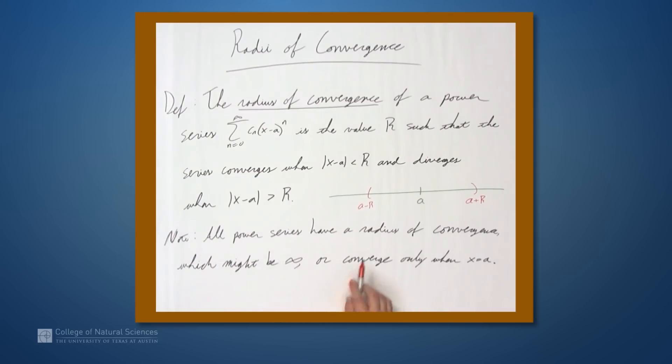In fact, all power series have a radius of convergence, which might be infinity (meaning it converges on the entire real line) or converges only when x equals a. Note that when x equals a, all these terms are zero. By this note, the behavior of a power series can't be too erratic. It can't converge here and then maybe on some separate interval over here but not in between. The values for which the series converge must be fairly well behaved, must be an interval.